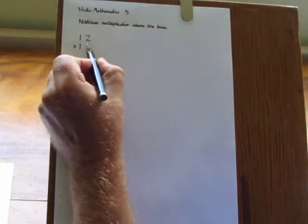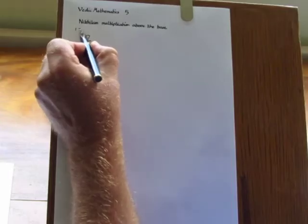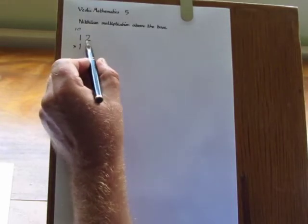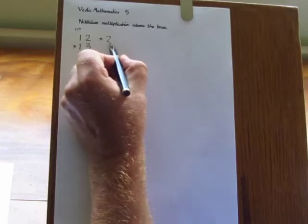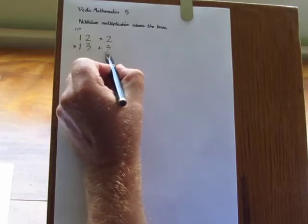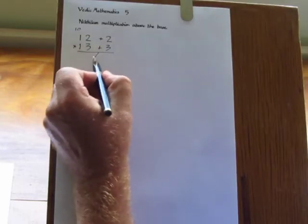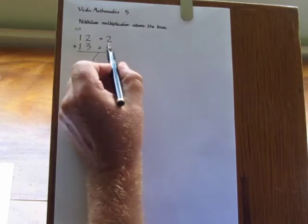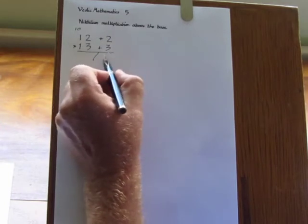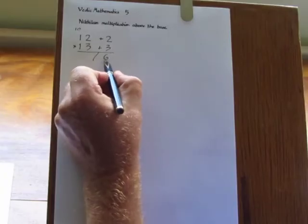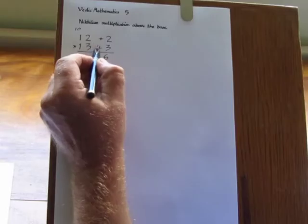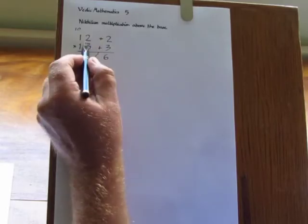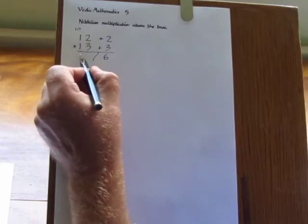And these two numbers are close to the base 10. Instead of deficiencies here we have surpluses, so we put a plus 2 and a plus 3. As before, on the right hand side we multiply the two surpluses together. Two 3's are 6. And instead of cross subtracting for the left hand side we cross add. So we have 13 plus 2, or 12 and 3, giving 15.